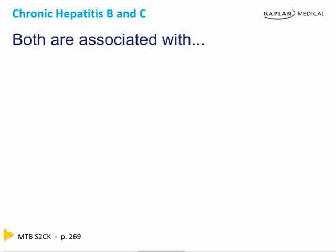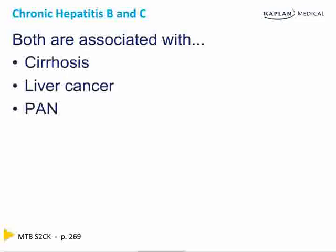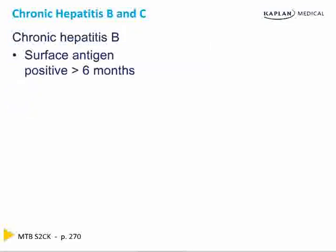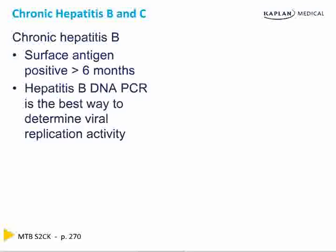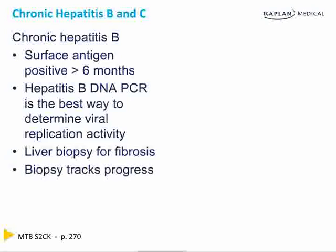Both chronic hepatitis B and hepatitis C are associated with cirrhosis, hepatocellular carcinoma, and polyarteritis nodosa. Chronic hep B patients are those in whom surface antigen is positive for greater than six months. Hepatitis B DNA levels by PCR is the best way to determine viral replication activity. A liver biopsy determines the degree of inflammation and fibrosis and helps understand the urgency for treatment.